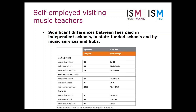We see clear differences between fees paid in independent schools, state-funded schools, and music services and hubs. The ranges are quite broad within these segments and there's also a geographical effect. Looking at the midpoints, London leads the pack, with the southeast and East Anglia only just behind — and in maintained schools actually being £1 ahead. There's considerable consistency across the UK in maintained schools, with London and the rest of the UK at £30 an hour and the southeast and East Anglia at £31.